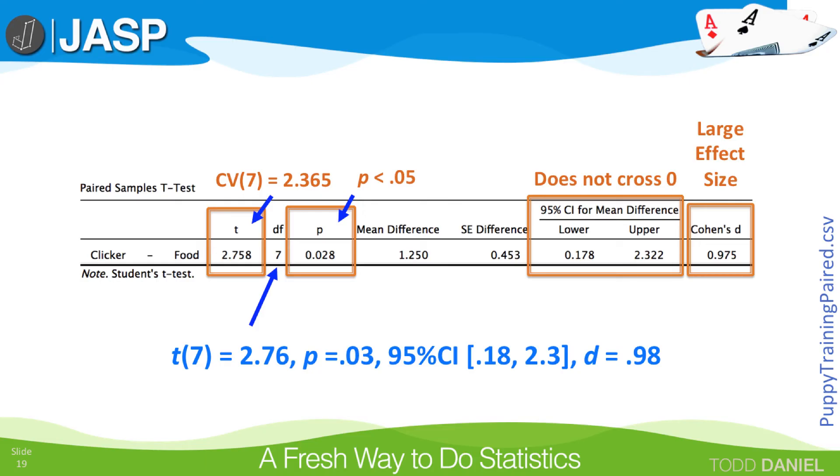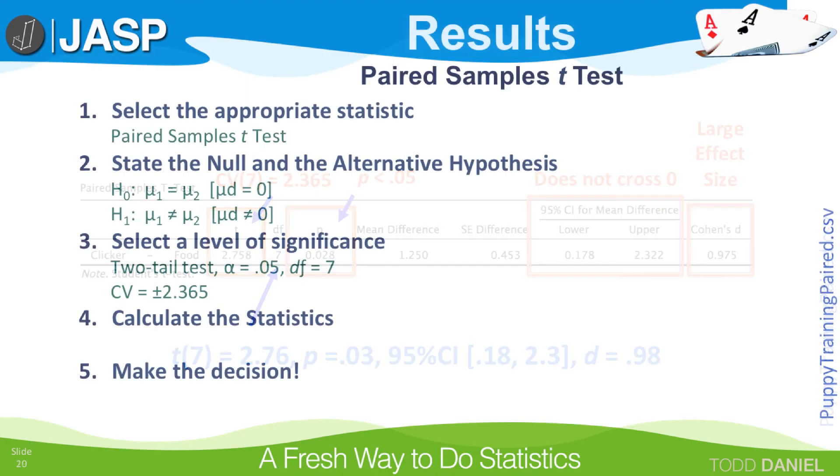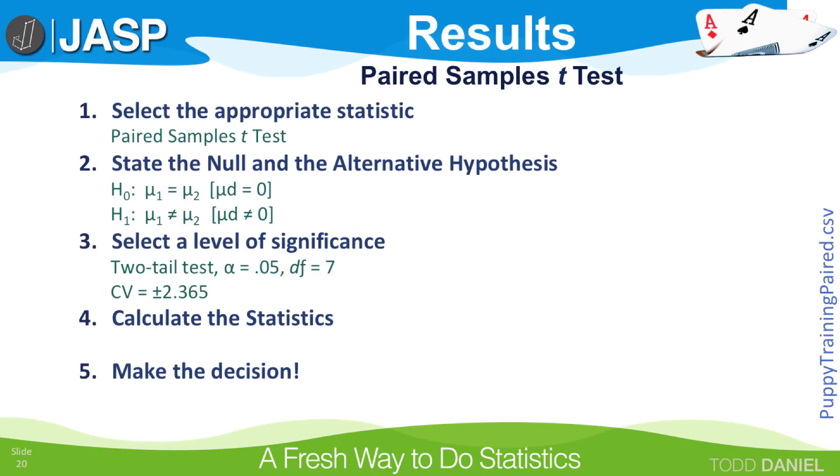Let's go back to our five steps of hypothesis testing. Step 4, calculate the statistics. The t-test value is a 2.758, which we will round to a 2.76. The p-value is a 0.028. Using the analogy of a dollar, this p-value is 2.8 cents, which is less than a nickel, or 0.05. That means that the t-test is significant and the two groups are statistically significantly different.